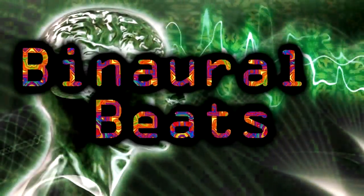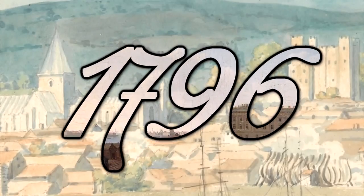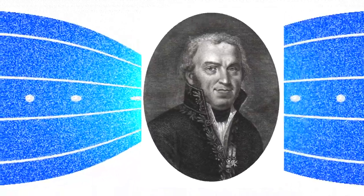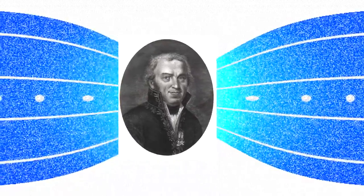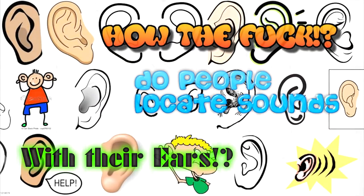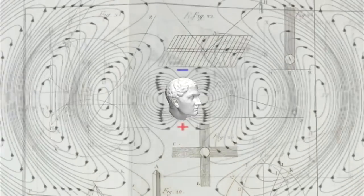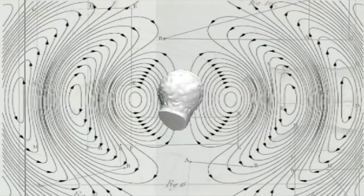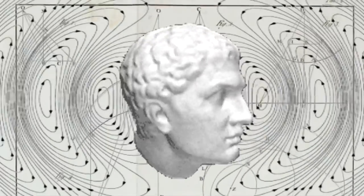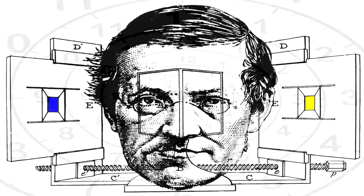Now, here is the history of binaural beats. In 1796, Italian physicist, savant, and science historian Giovanni Battista Venturi asked the question: how do people locate sounds with their ears? And with his experiments found the inequality of two impressions which are perceived at the same time by both ears determined the correct direction of the sound. Then nobody really cared about binaural hearing for the next 50 years.